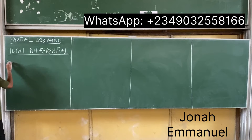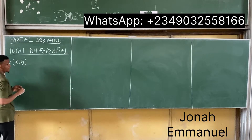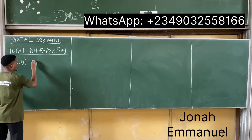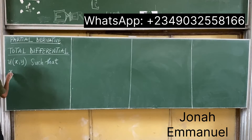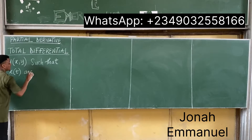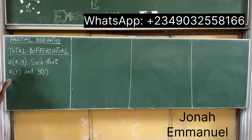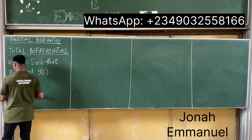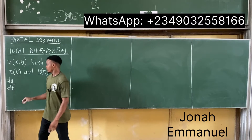Here's what to note. Let's say I'm given a function u of two variables x and y, such that x is a function of one variable t, and y is a function of the same variable t. Then we have that total differential — that's du over dt. It's now a total differential, no longer partial.